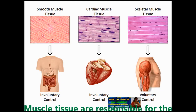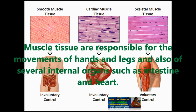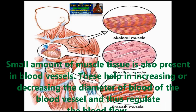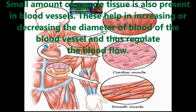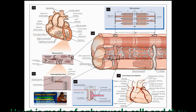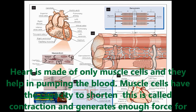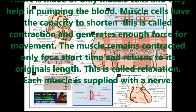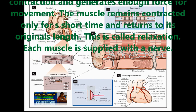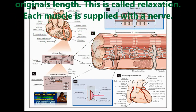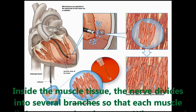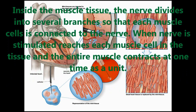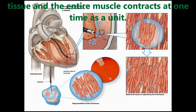Muscle tissues are responsible for the movement of hands and legs and also of several internal organs such as the intestine and heart. A small amount of muscle tissue is also present in blood vessels, which helps in increasing or decreasing the diameter of blood vessels and thus regulates blood flow. The heart is made up of only muscle cells and they help in pumping blood. Muscle cells have the capacity to shorten, called contraction, and generate enough force for movement. The muscle remains contracted only for a short time and then returns to its original length, called relaxation. Each muscle is supplied with a nerve, which divides into several branches so that each muscle cell is connected to the nerve. When the nerve is stimulated, the stimulus reaches each muscle cell and the entire muscle contracts at one time as a unit.